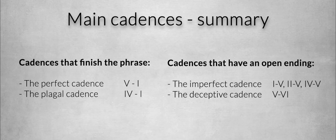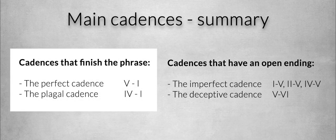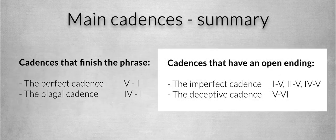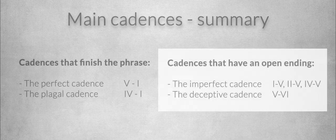So now you know that there are two main cadences that finish the music: the perfect cadence and the plagal cadence. And there are two main cadences that end the music in a way but leave room for the music to go on: the imperfect cadence and the deceptive cadence. Besides the four main cadences, there are some other cadences that work well and that you should know.